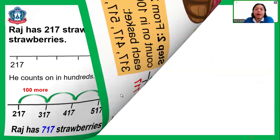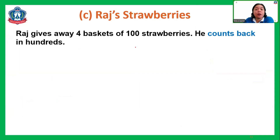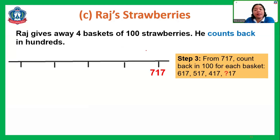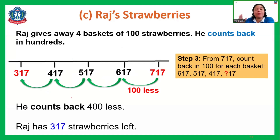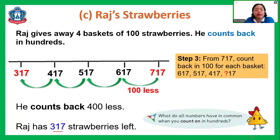Raj gives away four baskets of 100 strawberries, meaning 400 strawberries. He counts back in hundreds from 717, subtracting 100 each time: 617, 517, 417, and 317. In total he counts back 400, so from 717 it becomes 317. He now has 317 strawberries left. What did you notice P3 — when we count on and count back in hundreds, which place value changes?